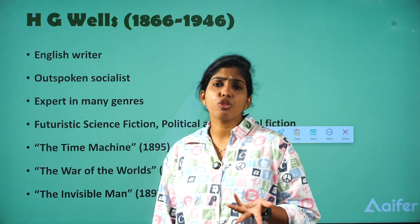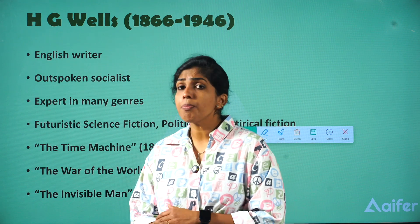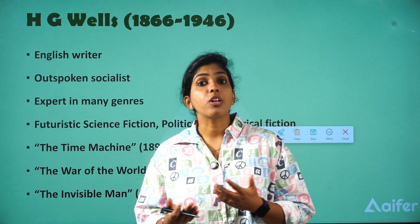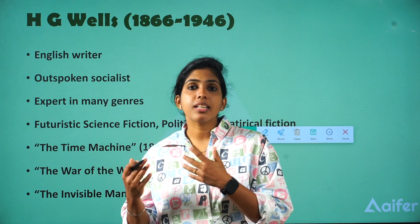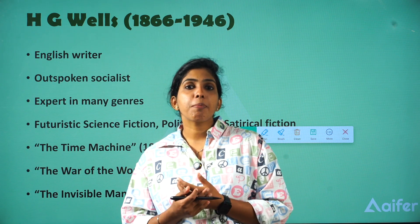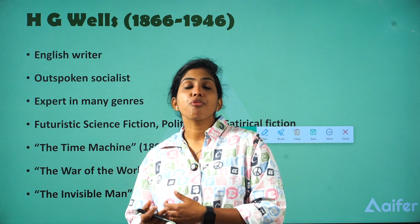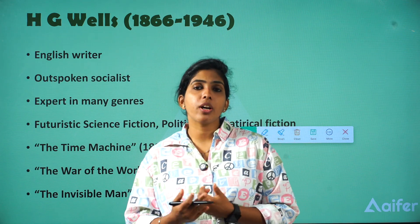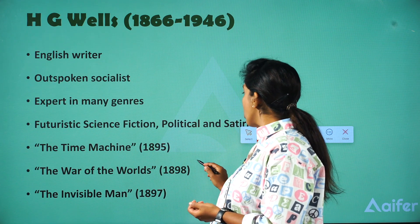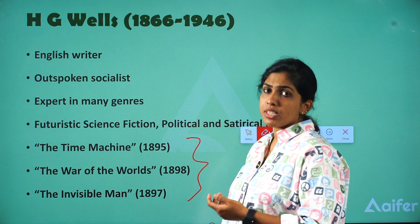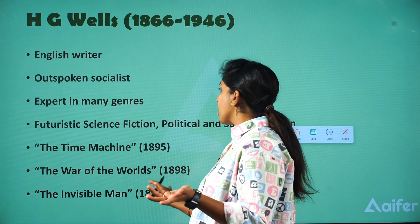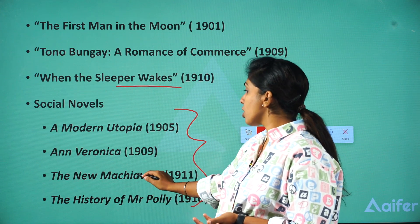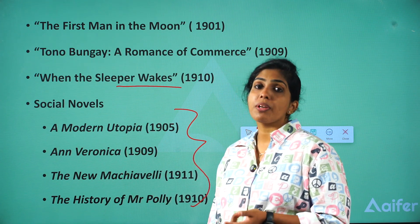H.G. Wells identified himself as a scientific fiction writer, but he was also an outspoken socialist who wrote many political and satirical works. His major scientific fiction works include The Time Machine, The War of the Worlds, The Invisible Man, and The First Man in the Moon. His social novels include Ann Veronica, The History of Mr. Polly, and A Modern Utopia — these reflect his socialist views.